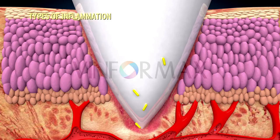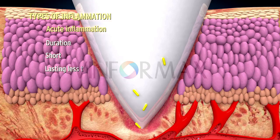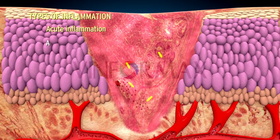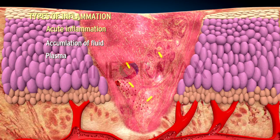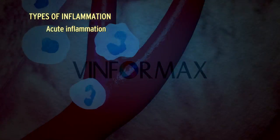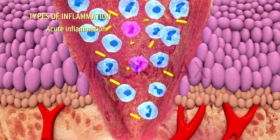Depending on the duration of response, inflammation may be classified as acute or chronic. The duration of acute inflammation is short, usually lasting less than two weeks. It resolves quickly and is usually followed by healing. The main features of acute inflammation are accumulation of fluid and plasma at the affected site, intravascular activation of platelets, and inflammatory cells in the form of polymorphonuclear inflammation. In some cases, the acute inflammatory response may be quite severe and is termed fulminant acute inflammation.